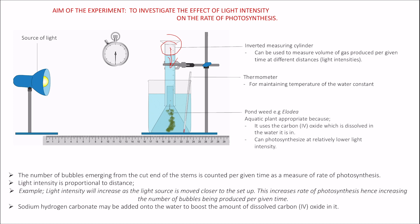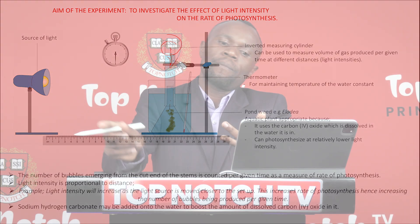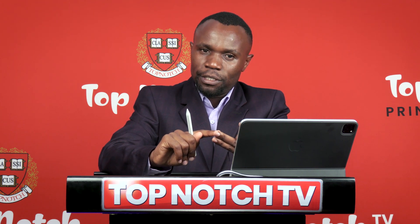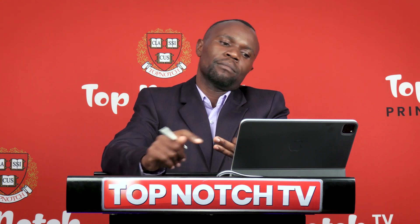This setup can also be used in another session where we are going to repeat it to investigate: is carbon dioxide concentration a factor in photosynthesis? How will we do that? We will use sodium hydrogen carbonate. Can chlorophyll concentration affect the rate of photosynthesis? How? By increasing the number of pondweeds. Can temperature affect the rate of photosynthesis? How? By using water baths at different temperatures.